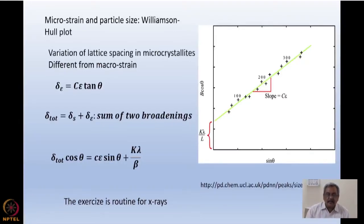This is given by something known as Williamson-Hull plot. Now the variation of the lattice spacing in microcrystallites coming from microstrain, and this is different from macrostrain which I discussed earlier. It is made some constant C, ε is the strain value and tan θ, where θ is the Bragg angle.